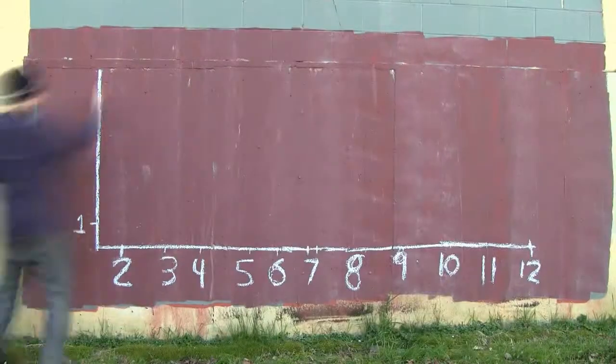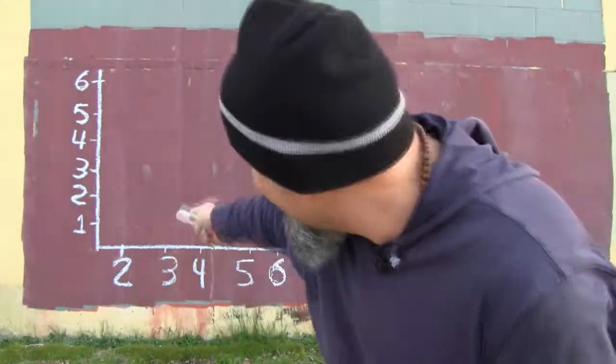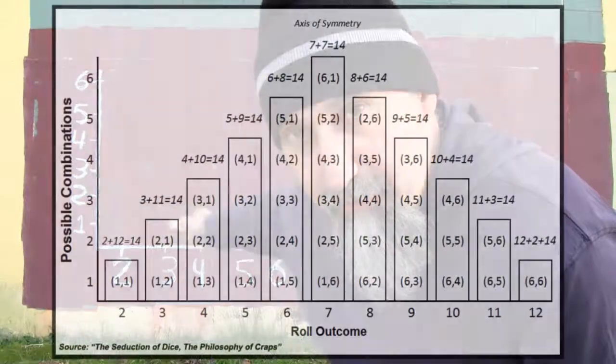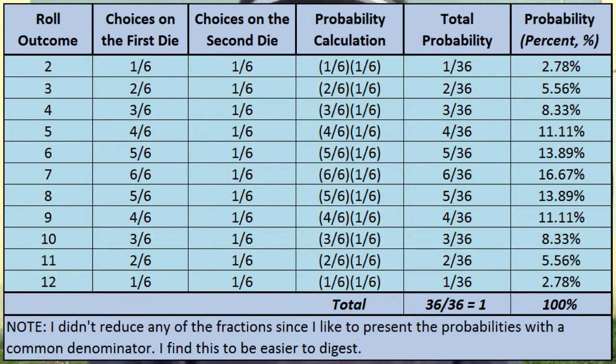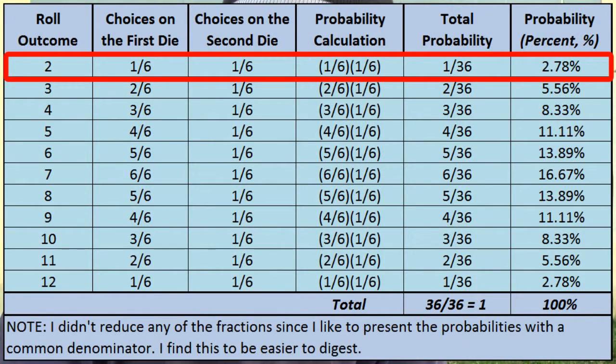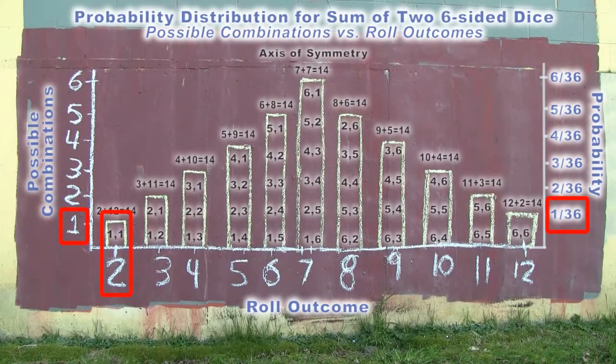On the y-axis we put the possible outcomes — the different ways we can get each number. The maximum possible outcome is with the seven, which has six ways. The lowest is one way to get a two or a 12. For number two, there's only one way: you need a one on the first die and a one on the second die. You multiply the two probabilities: one out of six times one out of six gives us one out of 36. The probability of getting a two is 1/36, and there's only one combination.